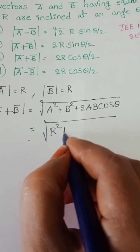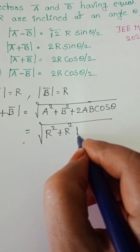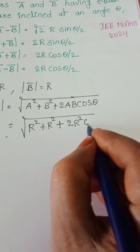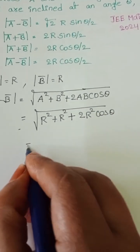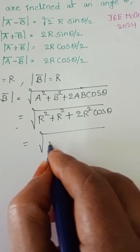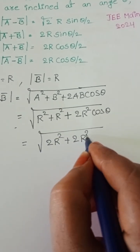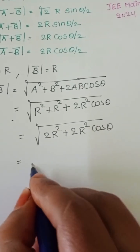r square plus r square plus 2r into r cos theta equals square root of 2r square plus 2r square cos theta. Take 2r square common.